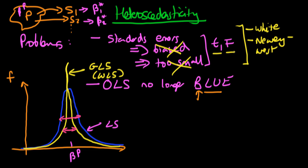In a sense that's a good thing because the ultimate goal of our model is to use it for inference. But the problem with adjusting the standard errors is that it's not really addressing the root cause of the problem — it's just addressing one of the actual effects of having heteroscedasticity. Whereas if we address the second problem, we can actually remove heteroscedasticity completely.